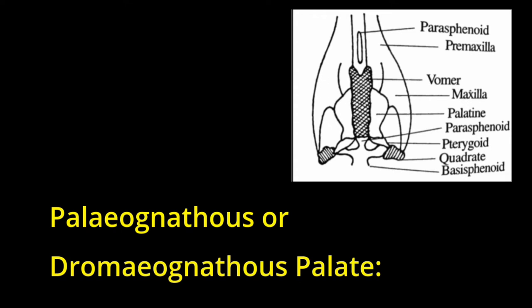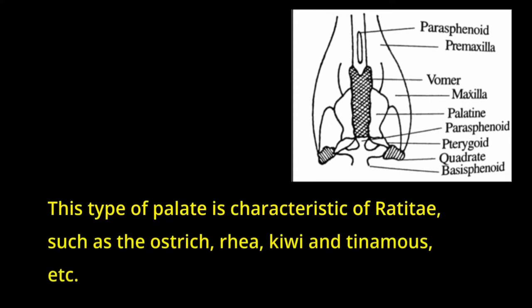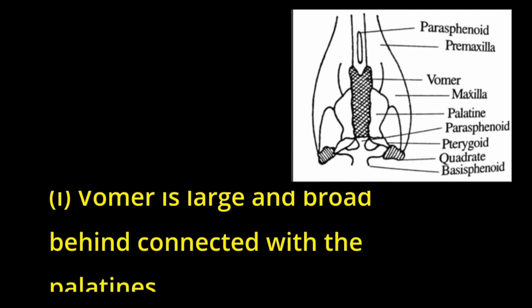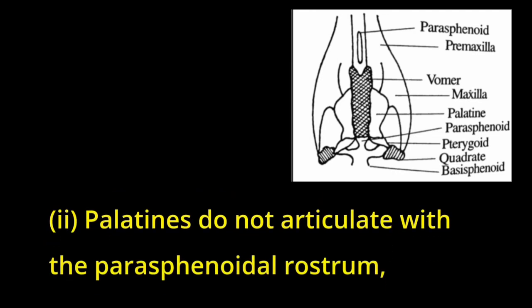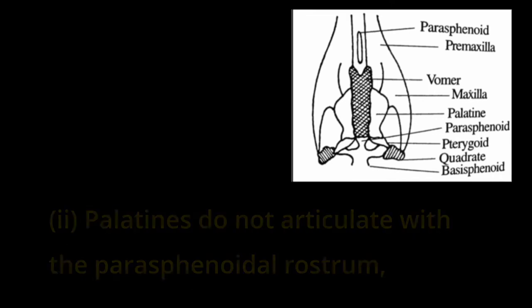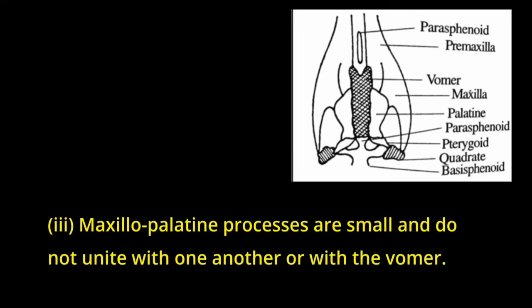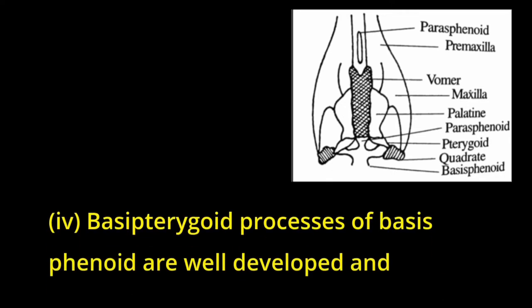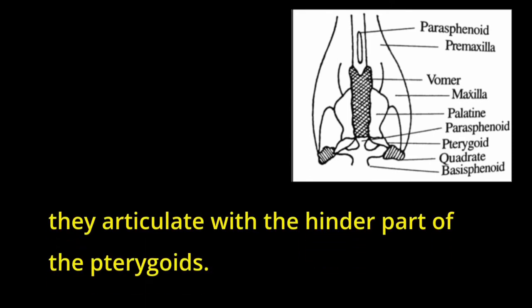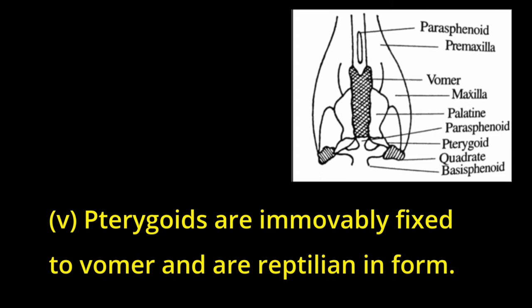1. Paleognathous or Dromaeognathous Palate. This type of palate is characteristic of Ratitae, such as the Ostrich, Rhea, Kiwi and Tinamis, etc. (i) Vomer is large and broad behind, connected with the palatines. (ii) Palatines do not articulate with the parisphenoidal rostrum, because the vomer intervenes between the two. (iii) Maxillopalatine processes are small and do not unite with one another or with the vomer. (iv) Basipterygoid processes of basisphenoid are well developed and they articulate with the hinder part of the pterygoids. (v) Pterygoids are immovably fixed to vomer and are reptilian in form. This type of palate is primitive and occurs in the Palaeognathi.